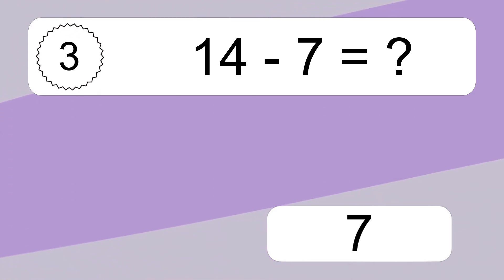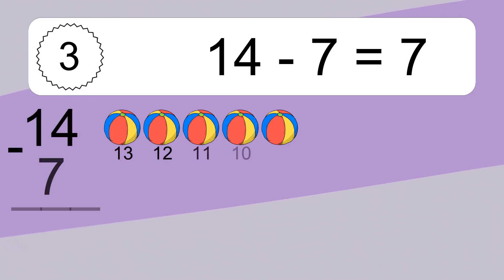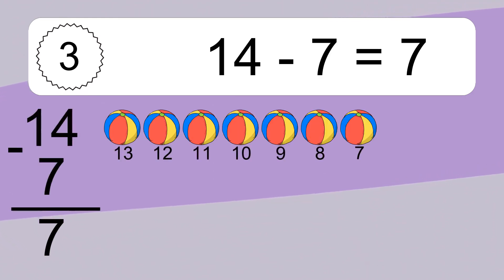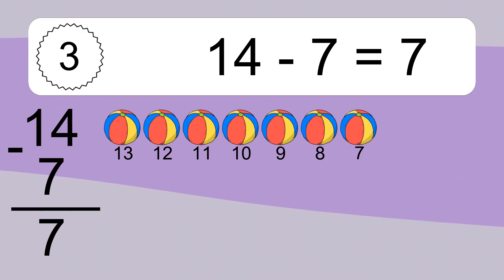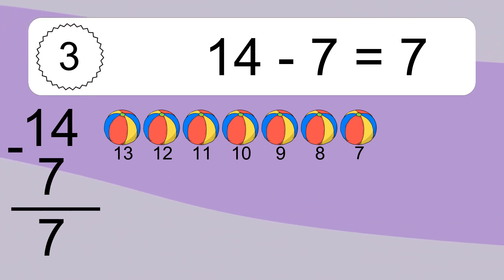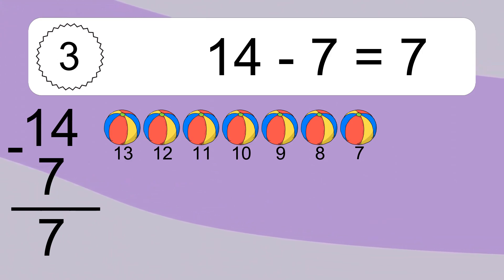14 minus 7 equals what? 14 minus 7 equals 7. Let's count it: 13, 12, 11, 10, 9, 8, 7.